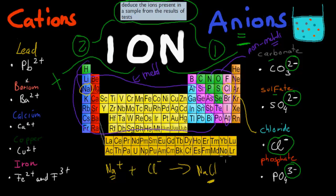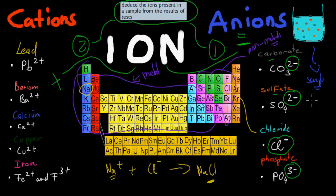You need to know that anions and cations come together to form a salt. The actual dot point itself says: deduce the ions — either a cation or anion — present in a sample from the results of tests. You're going to have tests that you might be given theoretically in your exam, or maybe in a lab as well. You have a sample, and you need to do tests to figure out what kind of ions are inside. You can see there are different types of colored dots inside — we don't know what they are. We need to figure out which kind of ions they are: could be carbonate, could be sulfate, could be chloride, could be phosphate, or it could be all of them inside that sample.